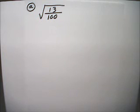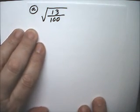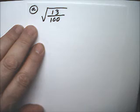Hello, this is Exponents and Radicals, Radical Expressions, Example 3. It has an A part and a B part, and A part is simplifying this radical.